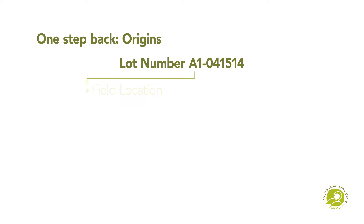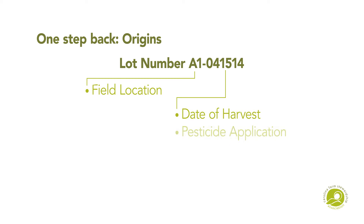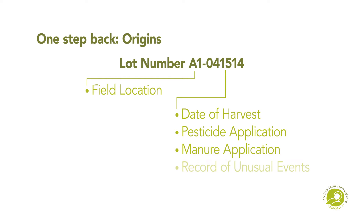Traveling one step back using your lot number will identify the original field location, the date the product was harvested, and a recorded history where you can review activities such as pesticide and manure application, any unusual events such as flooding or wildlife intrusion, or employee health issues.